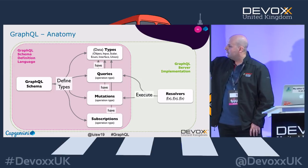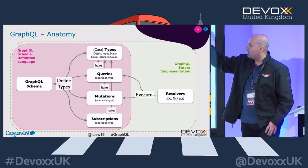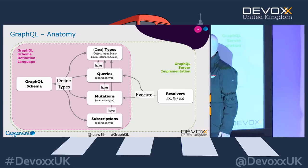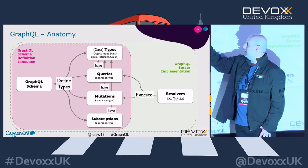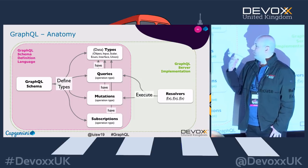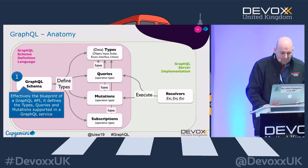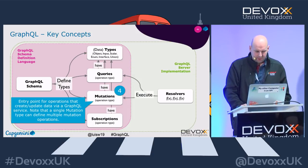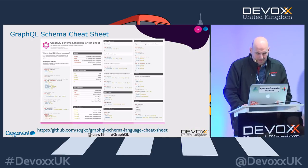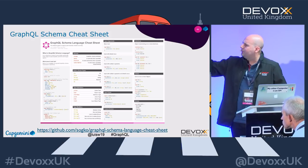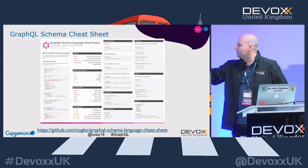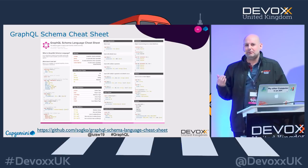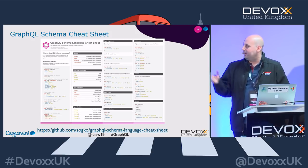A query type needs input and output — that's why you have data types: objects, inputs, enumerations, interfaces, or unions of two different objects. I refer to them as data types because that's what you're defining. There's a cheat sheet in the slides that's quite useful to navigate through the specification. At the beginning it feels heavy, but it'll take you a day at most to get your head around it.